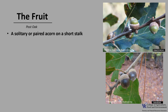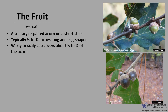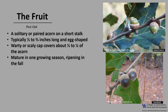The fruit is an acorn. They are either solitary or paired and on very short or sessile stalks. The acorns are typically one-half to two-thirds inches long and sort of egg-shaped. They have a warty scaly cap that covers about one-third to one-half of the acorn. The acorns mature in one growing season, ripening in the fall — usually September through November — and they germinate once they drop.